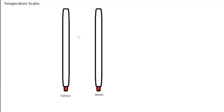Now we're going to look at some easier temperature conversions. If you've already looked at the Celsius to Fahrenheit, we're going to look at the Celsius and the Kelvin scale. The Kelvin temperature scale is what we usually refer to as the absolute temperature scale. This is because it was devised such that zero on the Kelvin scale is absolutely positively the coldest possible temperature.